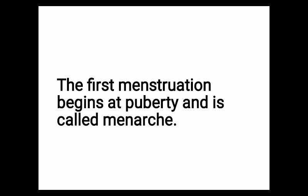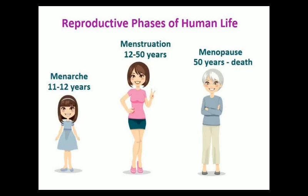The first menstruation begins at the age of puberty and is called menarche. The first reproductive cycle occurs at roughly 11 to 12 years of age. The last menstrual cycle which occurs in any female is known as menopause, and it mainly occurs at around 50 years of age.